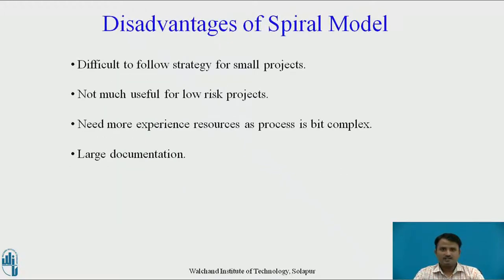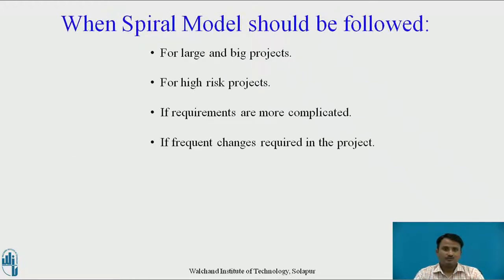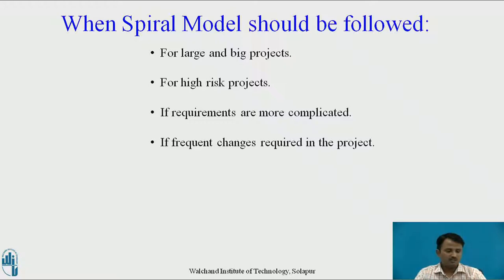The disadvantages are: difficult to follow strategy for small projects, not much useful for low risk projects, needs more experienced resources as the process is complex, and requires large documentation. The Spiral Model should be used for large and big projects, for high risk projects, if requirements are more complicated, and if frequent changes are required in the project.